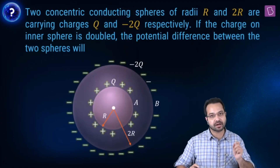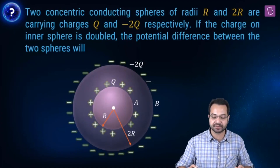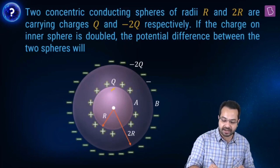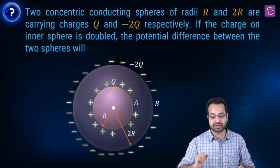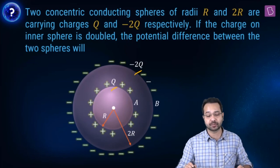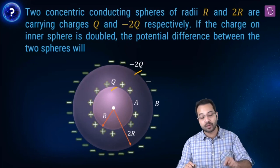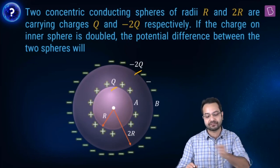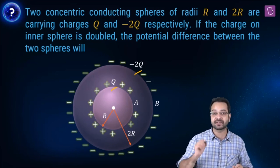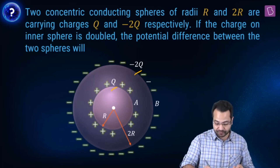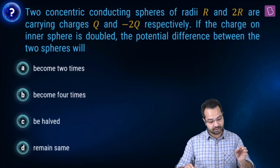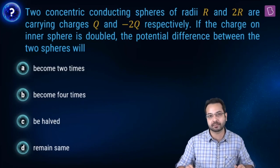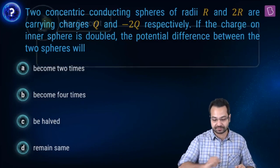We have two concentric conducting spheres of radii R and 2R. The inner conductor has a charge Q, the outer conductor has a charge minus 2Q. Now we are doubling the charge on the inner conductor, then we have to state that the potential difference between the two spheres will become 2 times, become 4 times, be halved, or remain the same. That is the question.